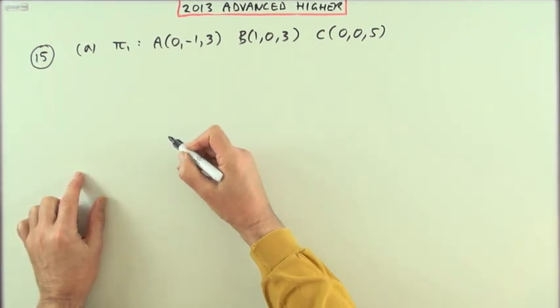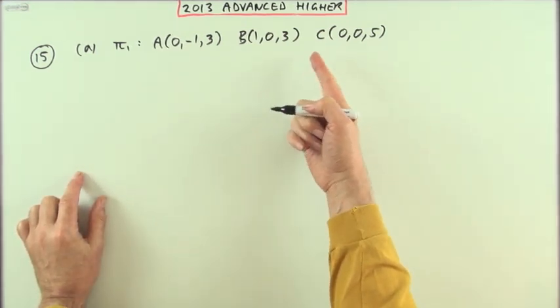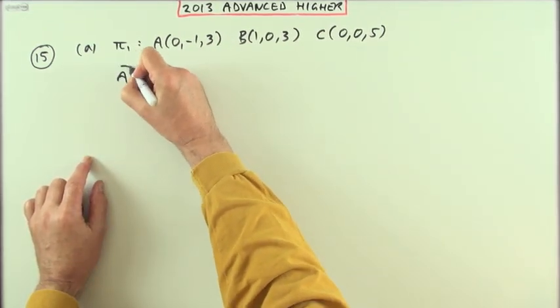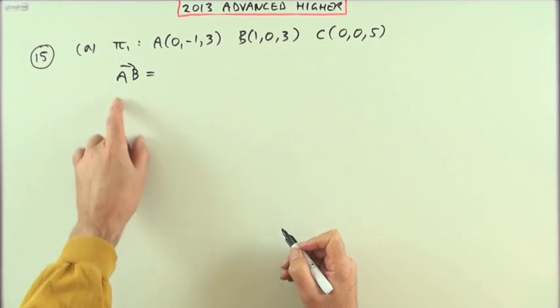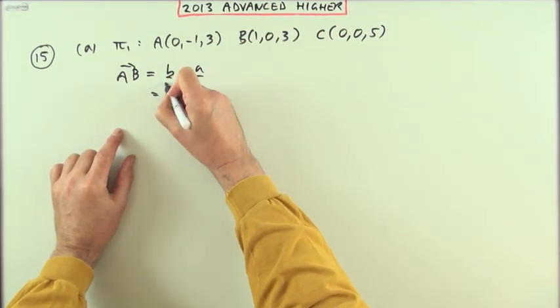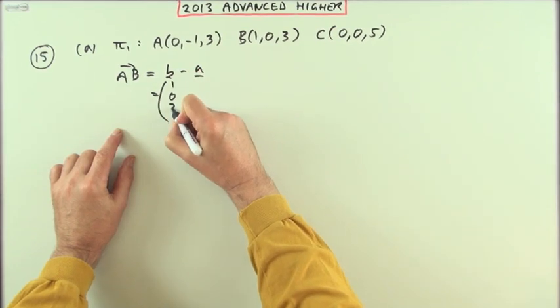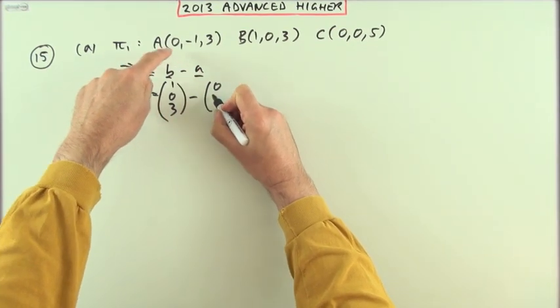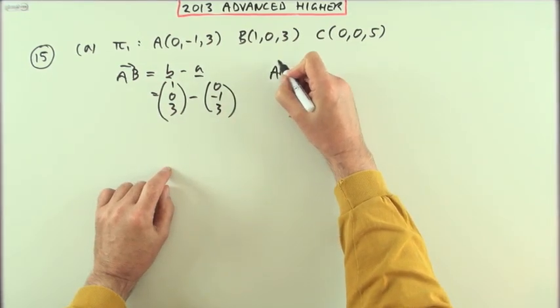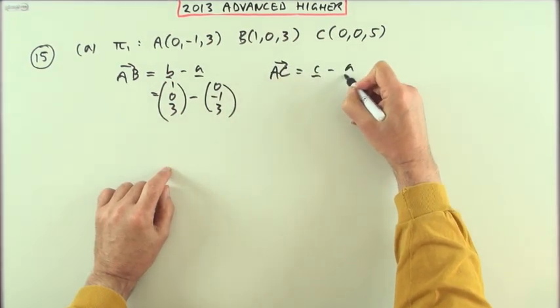To get the normal vector, I'll need to define a couple of vectors that lie on the plane. So AB lies on the plane—that would be b minus a. If I want to spell it all out: (1,0,3) take away (0,-1,3). And any other one—AC would do, so c minus a.